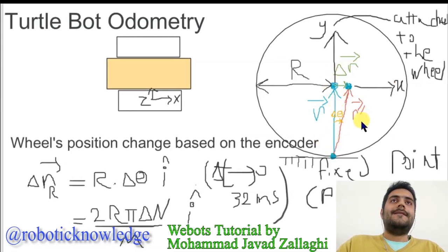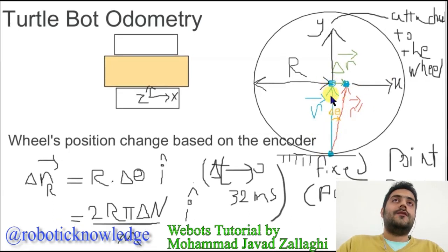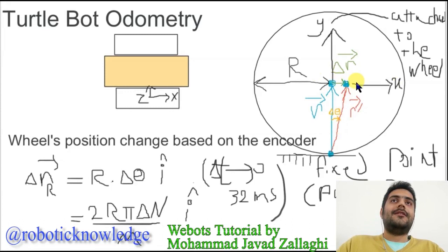We know that the velocity vector is perpendicular to this yellow line. So the change in position of this interesting point should be in the x direction for a tiny time step.